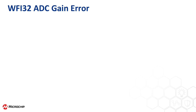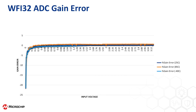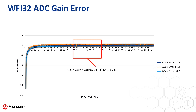One representation of overall accuracy is the gain error. To calculate the gain error, we feed in a known voltage to the ADC and compare the reported ADC reading to the expected value. As you can see here, the gain error of WFI32 lies within negative 0.3% to plus 0.7% over temperature.